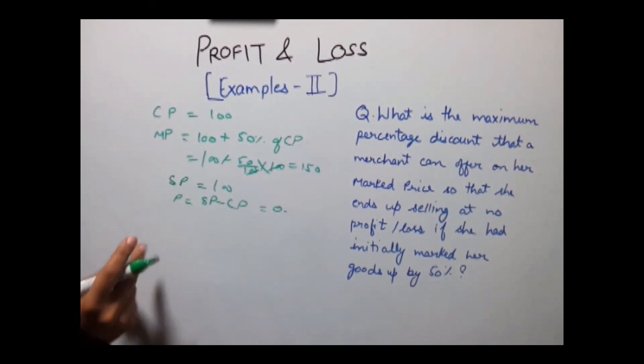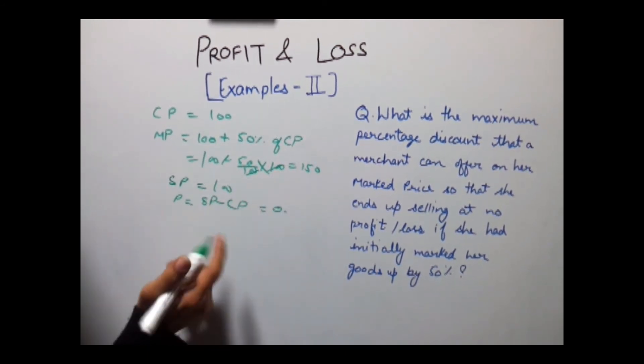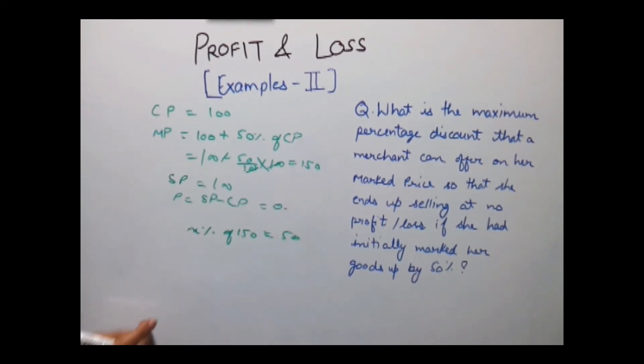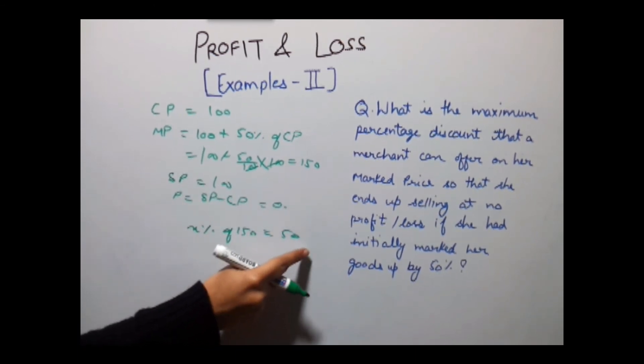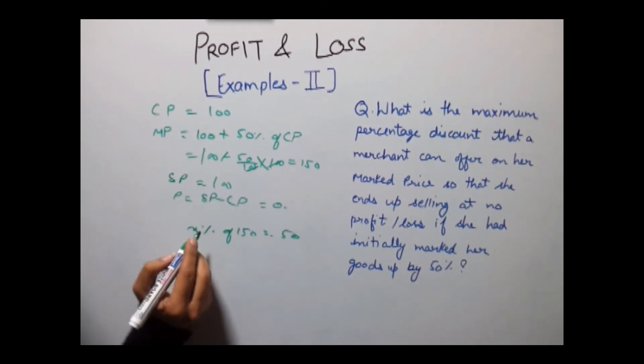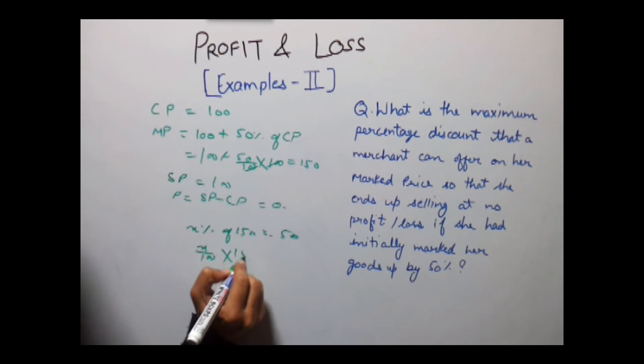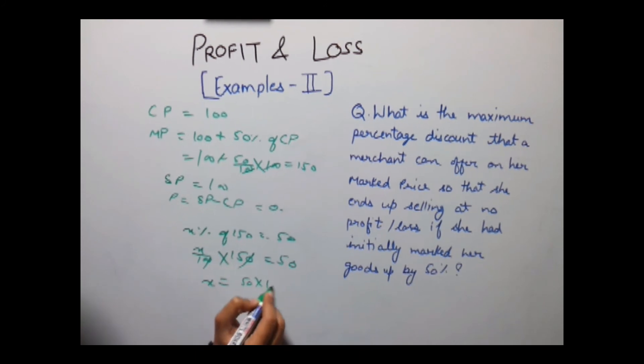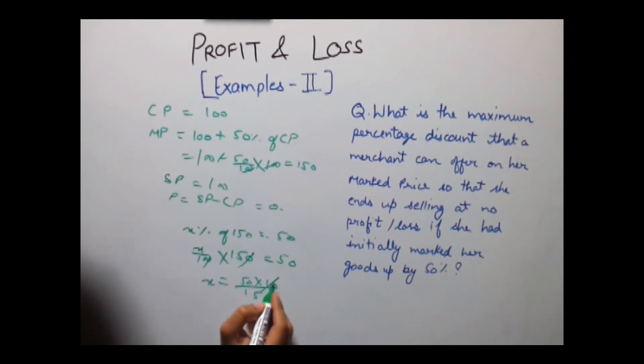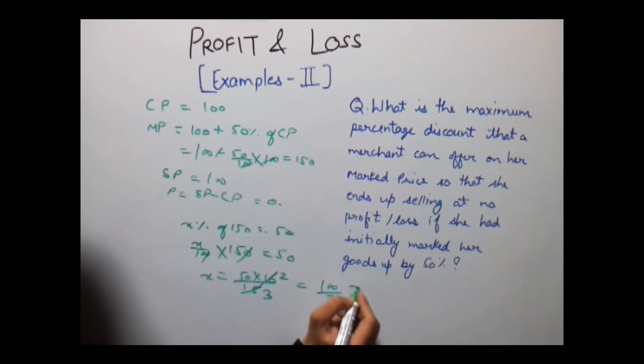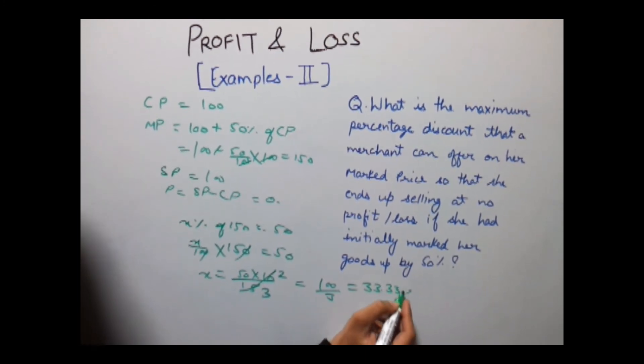So our discount percentage should be equal to: x percent of 150 is equal to 50. That is, this percent discount on 150 will get 50 rupees discount so that she can sell the goods at 100 rupees. Now x upon 100 into 150 is equal to 50. x is equal to 50 into 100 divided by 150, that is 100 upon 3, which gives 33.33 percent.